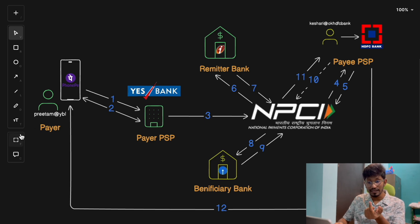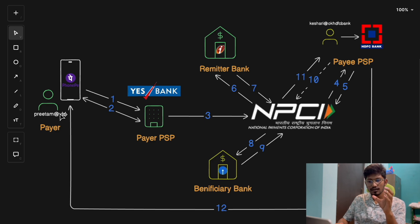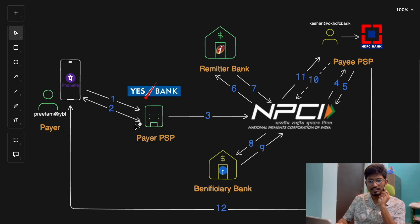The app then routes the request to its PSP based on the payer's VPA. For example, the payer is 'pritham@ybl' — '@ybl' stands for Yes Bank Limited — hence it routes the request to Yes Bank PSP. Since PhonePe is partnered with multiple banks, it routes based on the UPI address suffix. This is how Step 1 works and the payment request is routed to the appropriate Payment Service Provider.